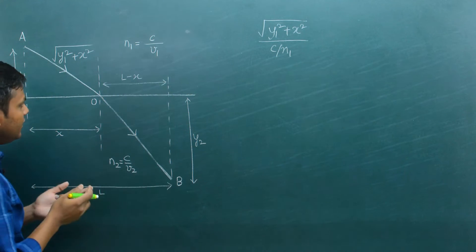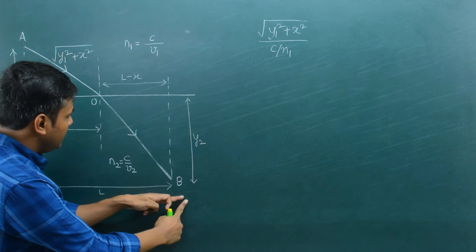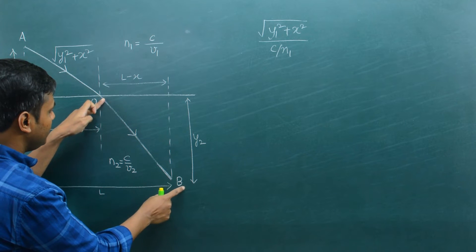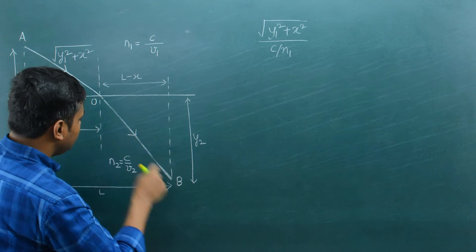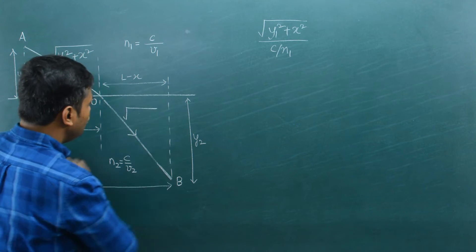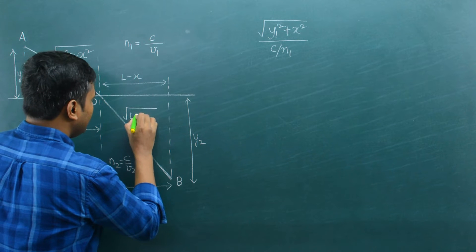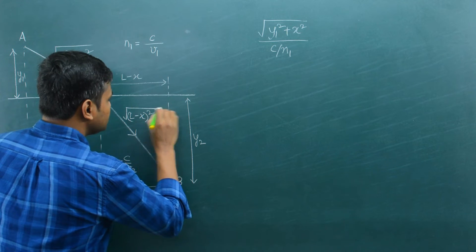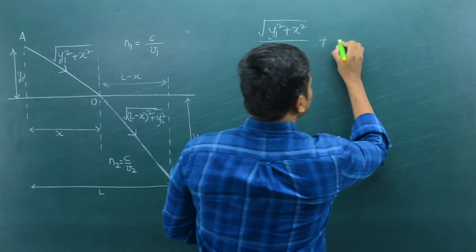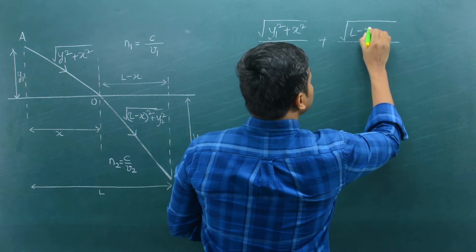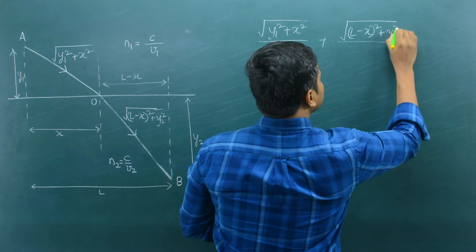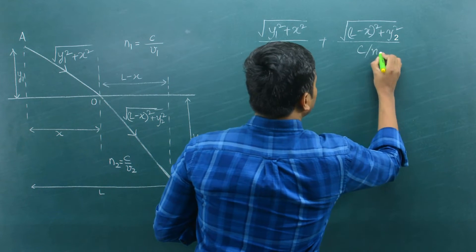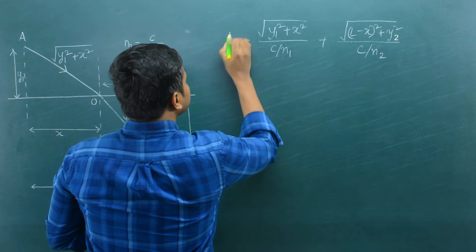Similarly, the time taken for light to go from O to B is the hypotenuse of the second right-angled triangle divided by the velocity in that medium. That hypotenuse is √((l−x)² + y2²), and the velocity is v2 = c/n2. So the time from O to B is n2·√((l−x)² + y2²)/c. The total time for light to travel from A to B is the sum of these two expressions.